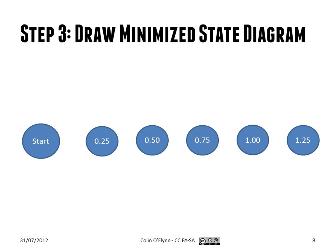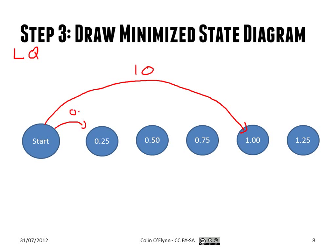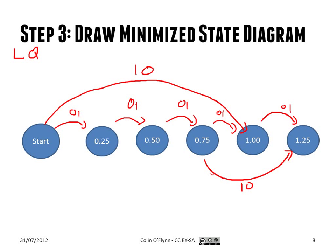A minimized diagram represents each state as an amount of money, and depending on the inputs you transition between those states. If you put in a loony, you move to the dollar state. If you put in a quarter, you move accordingly. Even if you put in three quarters and a loony and overpay, you still just move to the appropriate state. In this way, it covers many more options with only six states.